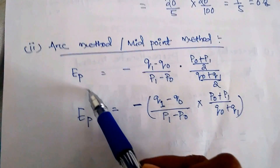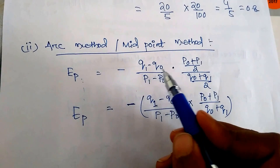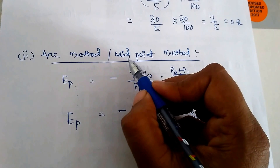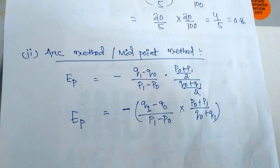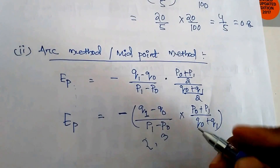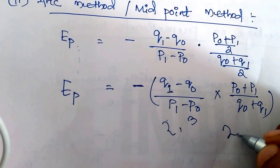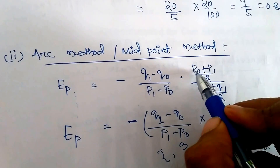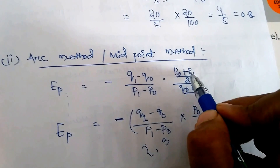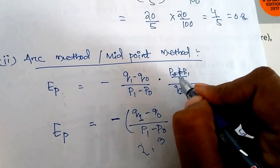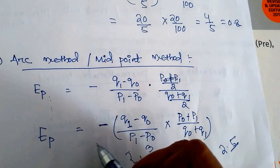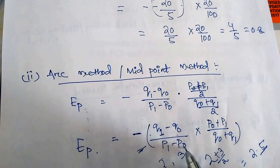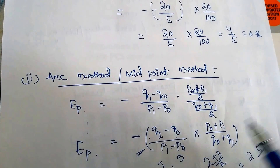The arc/midpoint method formula is: EP = −(Q1 − Q0) / (P1 − P0) × (P0 + P1) / 2. The midpoint method uses the midpoint of prices and quantities. For example, the midpoint of 2 and 3 is (2 + 3) / 2 = 2.5. So to find the midpoint of P1 and P0, we add them and divide by 2. The final formula becomes: EP = −(Q1 − Q0) / (P1 − P0) × (P0 + P1) / (Q0 + Q1).